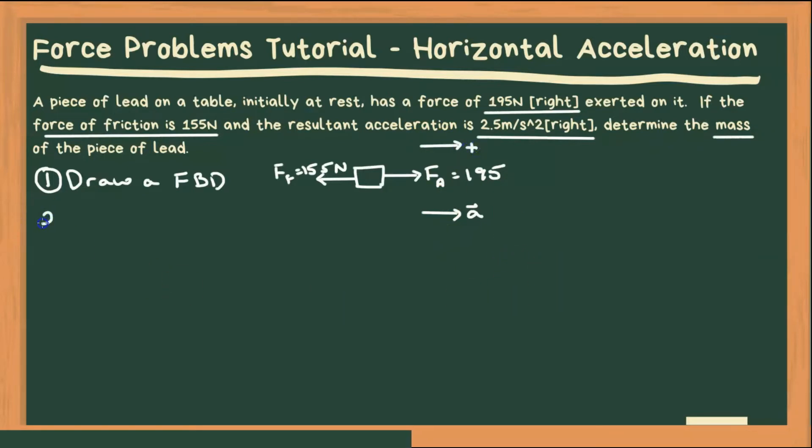Alright, step two. We're going to write out our net force. So F net, and this is in our horizontal direction, is going to be we have our applied force, which is in our positive direction, so that's going to be a positive force. And then we have a frictional force in the opposite direction, so it's a negative force, so minus the force of friction. So there is F net.